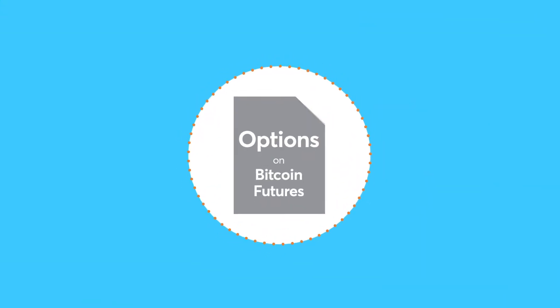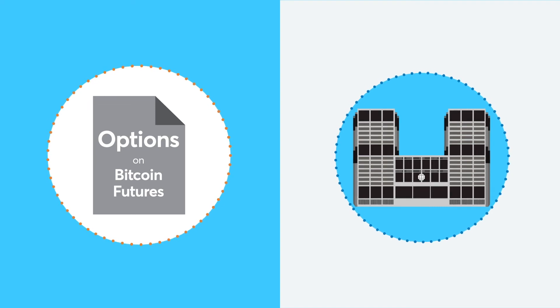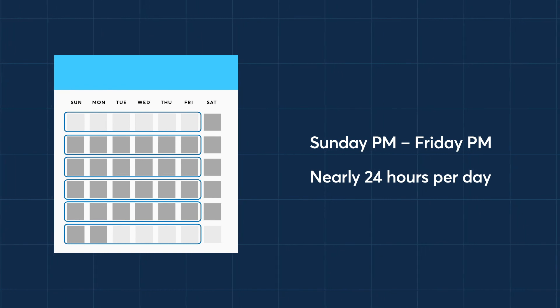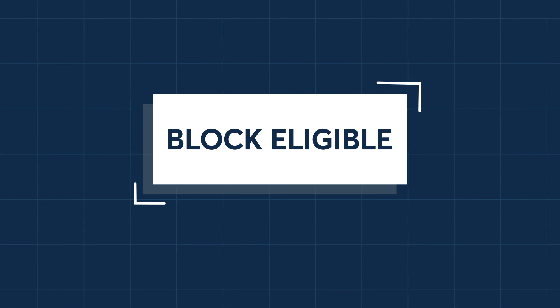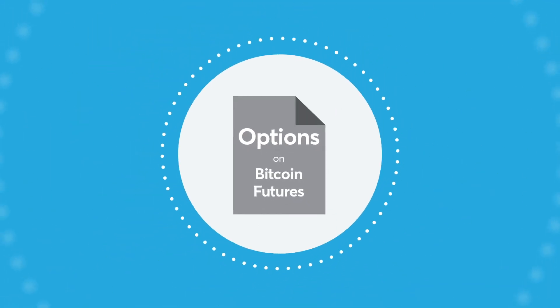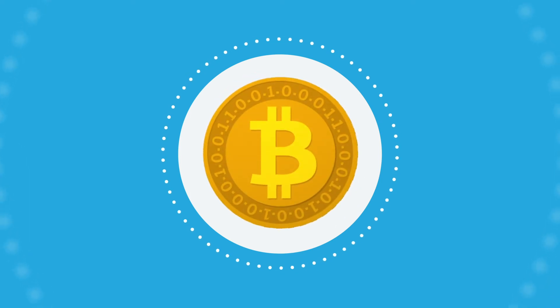CME options on Bitcoin futures will trade on an established regulated exchange and are centrally cleared through CME Clearing, therefore eliminating counterparty or clawback risk. They will be available to trade on CME's Globex electronic platform Sunday afternoon through Friday afternoon, nearly 24 hours per day, and will be block trade eligible. Bitcoin futures and options are margined as a portfolio, providing greater capital efficiency. Options on Bitcoin futures — another option to manage Bitcoin risk or speculate on the price of Bitcoin.